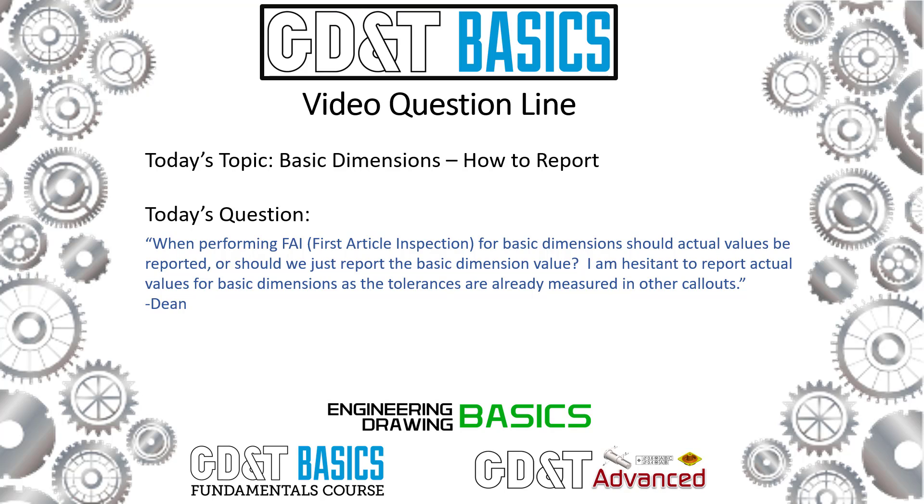Today's question comes from Dean. Dean's question is when performing FAI or first article inspection for basic dimensions, should actual values be reported or should we just report the basic dimension value? I am hesitant to report actual values for basic dimensions as the tolerances are already measured in other columns.